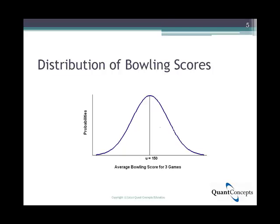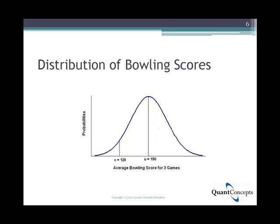Remember, our cutoff value is 120. You will believe Sam if he scores over 120 in your three games with him, and you won't believe him otherwise. The shaded region is known as the rejection region. If Sam's average score over his three games falls below 120, you will reject his claim that his long-term average bowling score is 150.